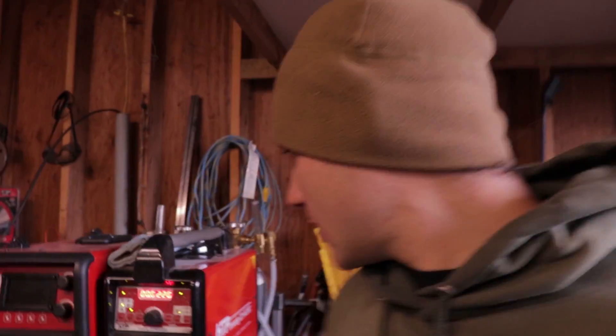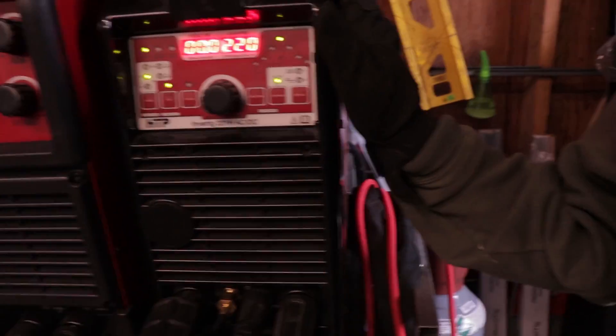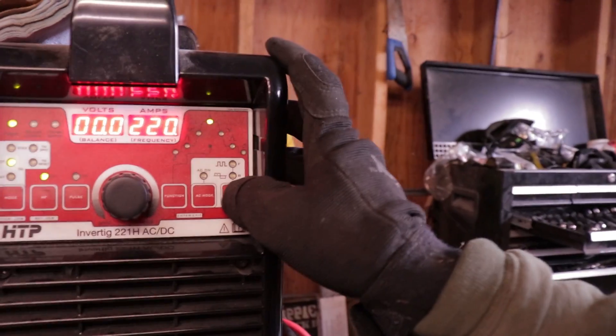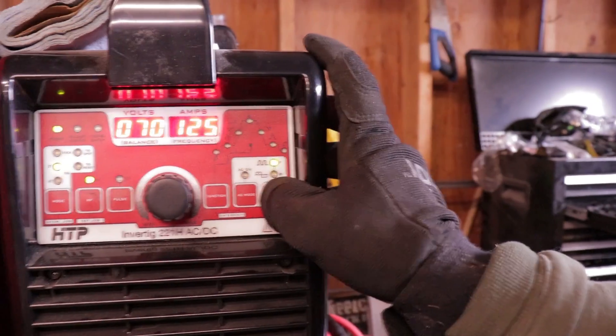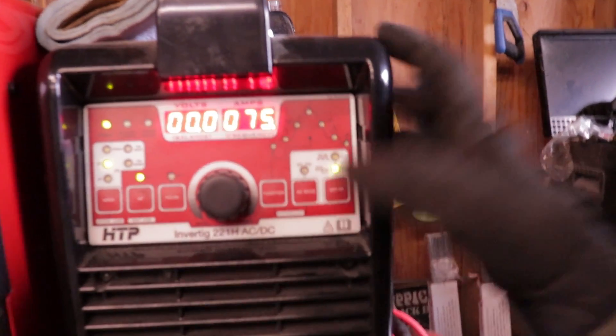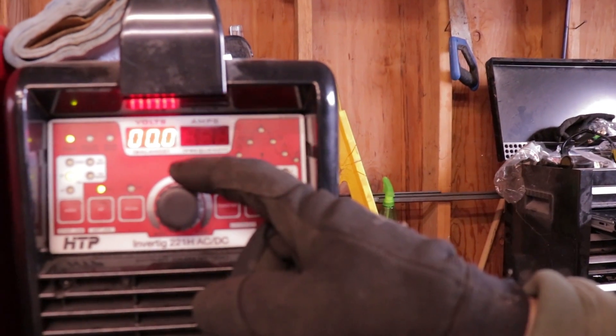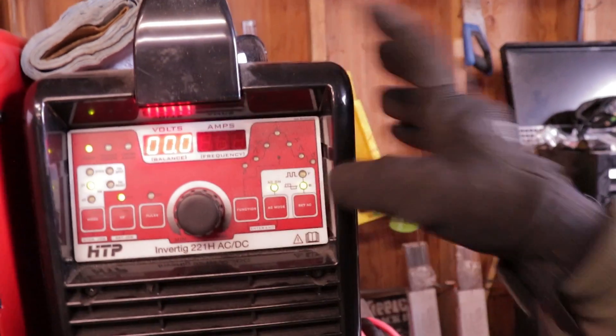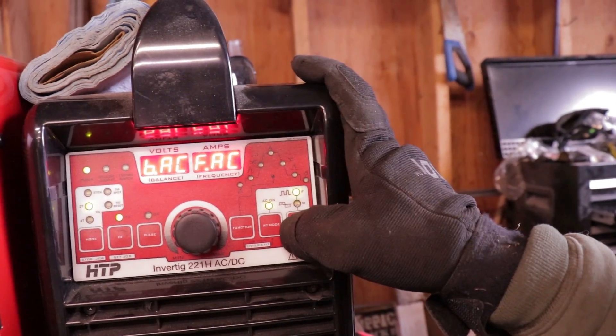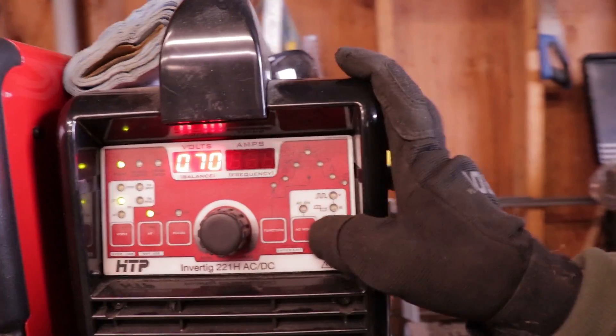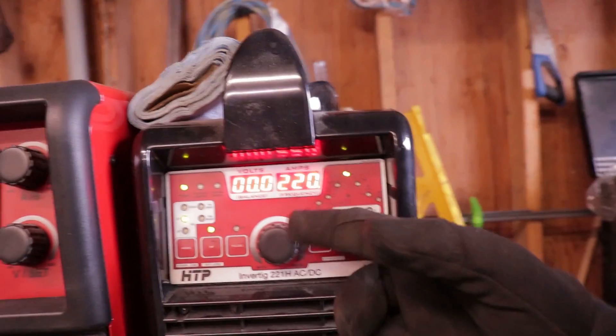Today I'm going to show you how to set up your gas flow for TIG welding aluminum. I'm running the HTP Invertig 221 and I've been messing around with some other settings. I've got the independent amplitude adjustment set at 75. My frequency right now is 125 and my balance is 70.